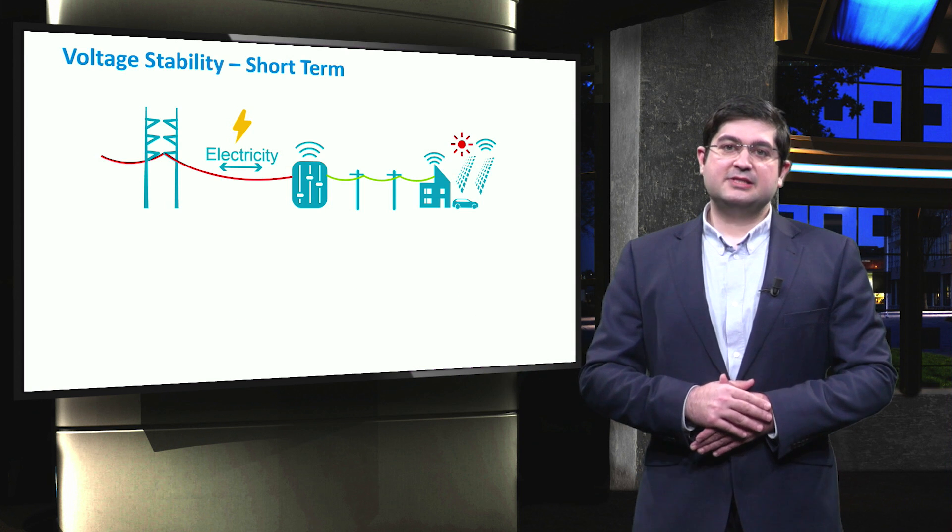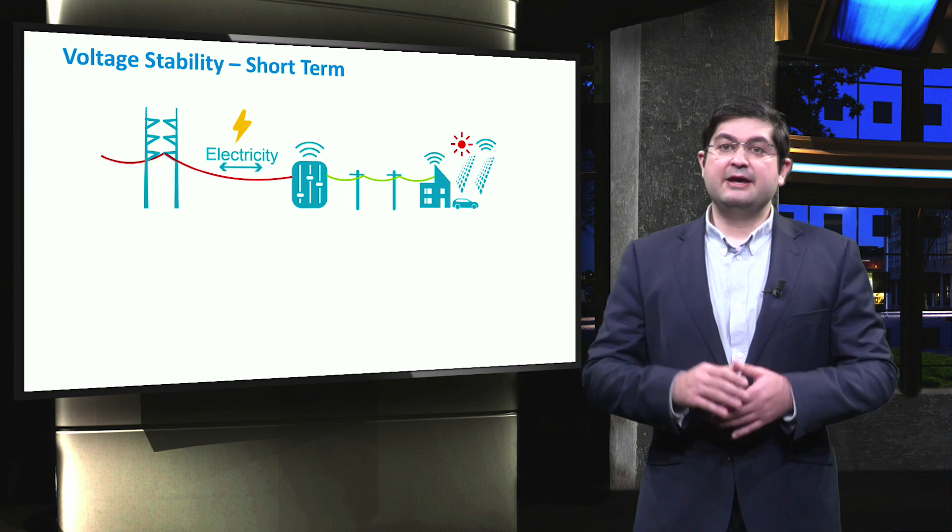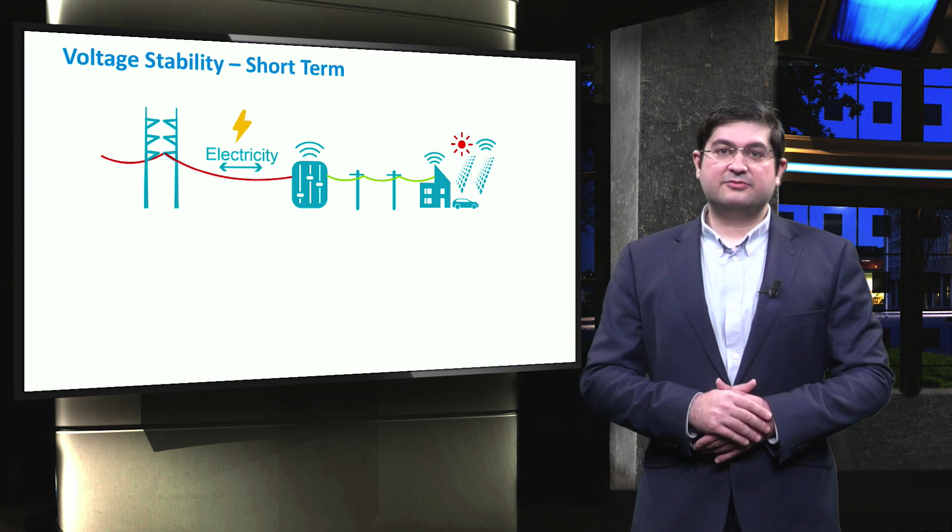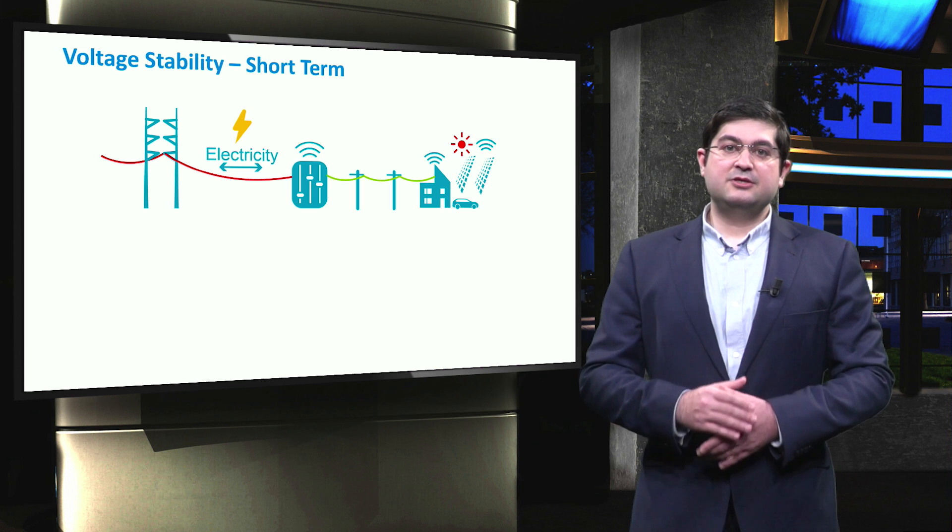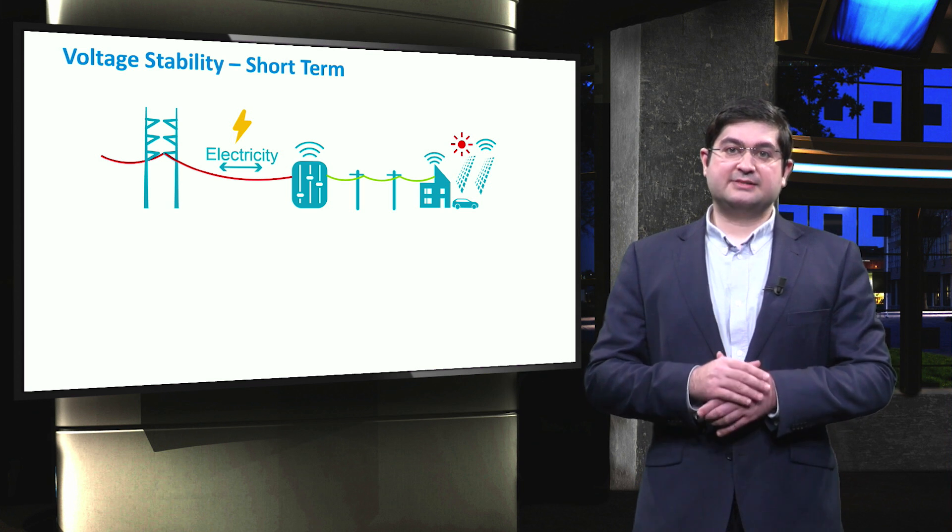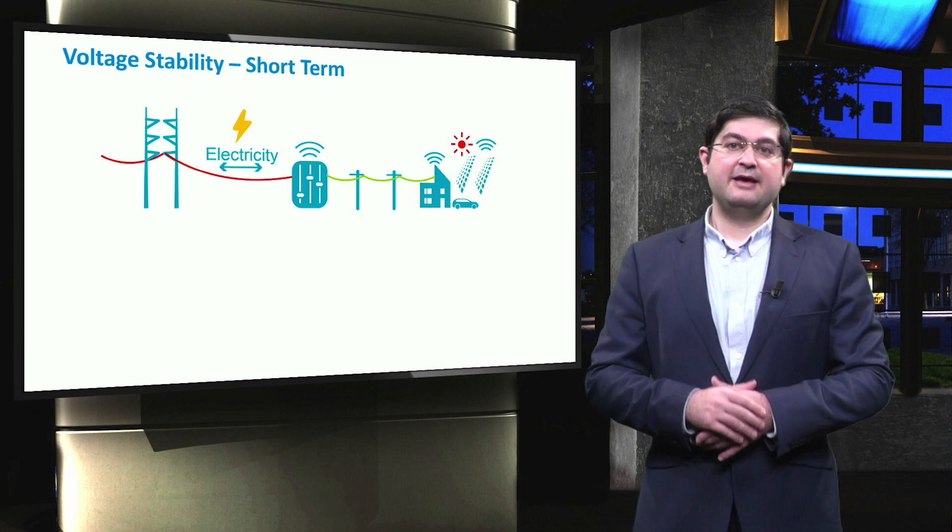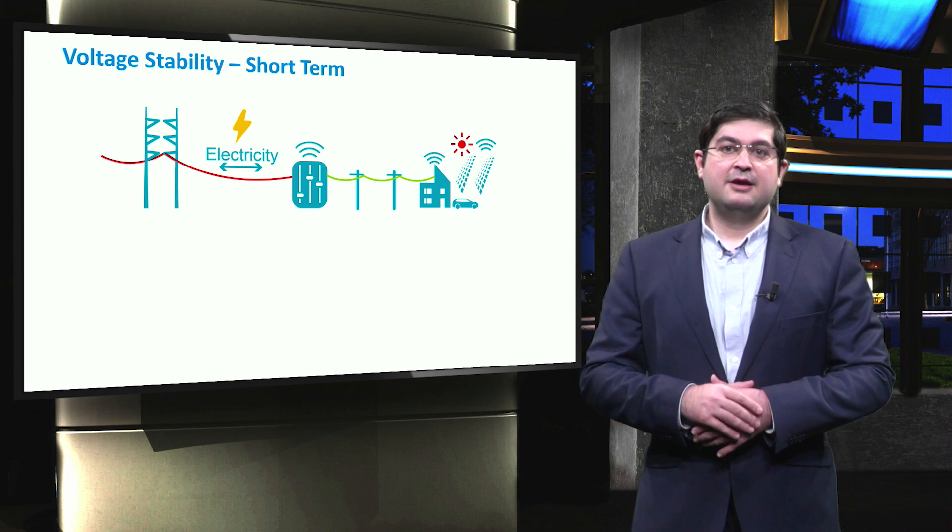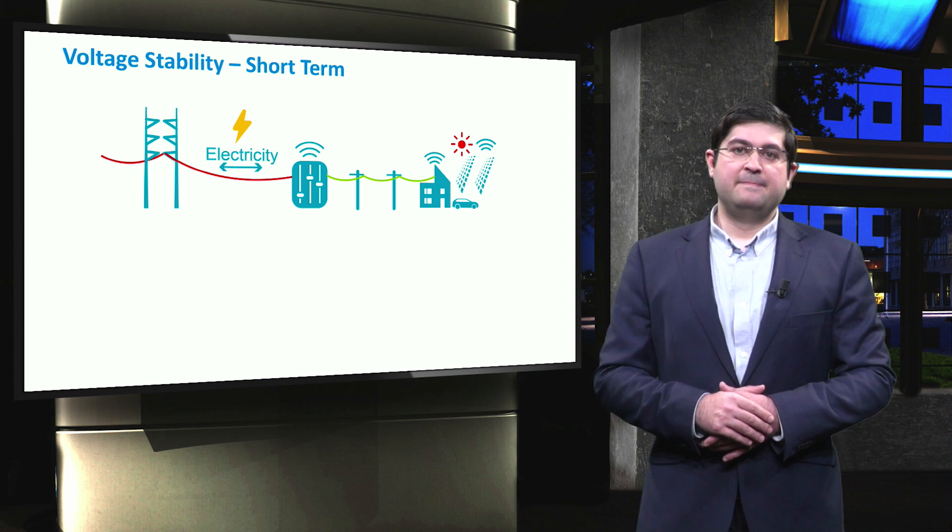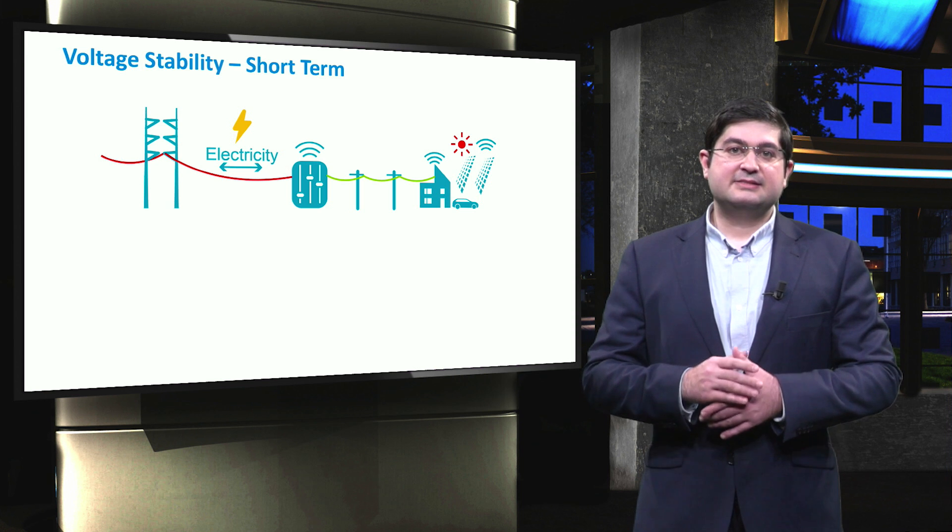It is worth emphasizing that the classification of stability in microgrid is different than the one of traditional power systems due to several reasons. If the microgrid is connected to the external grid, then obviously the size of microgrid is relatively small compared to the whole system. Therefore, the frequency of microgrid is dominantly set by the grid.